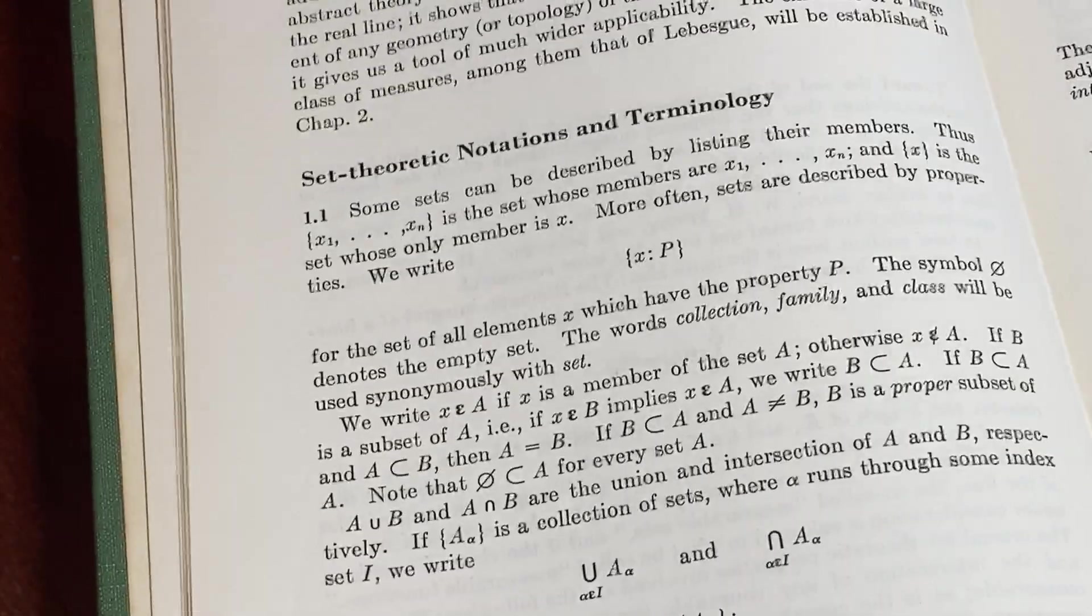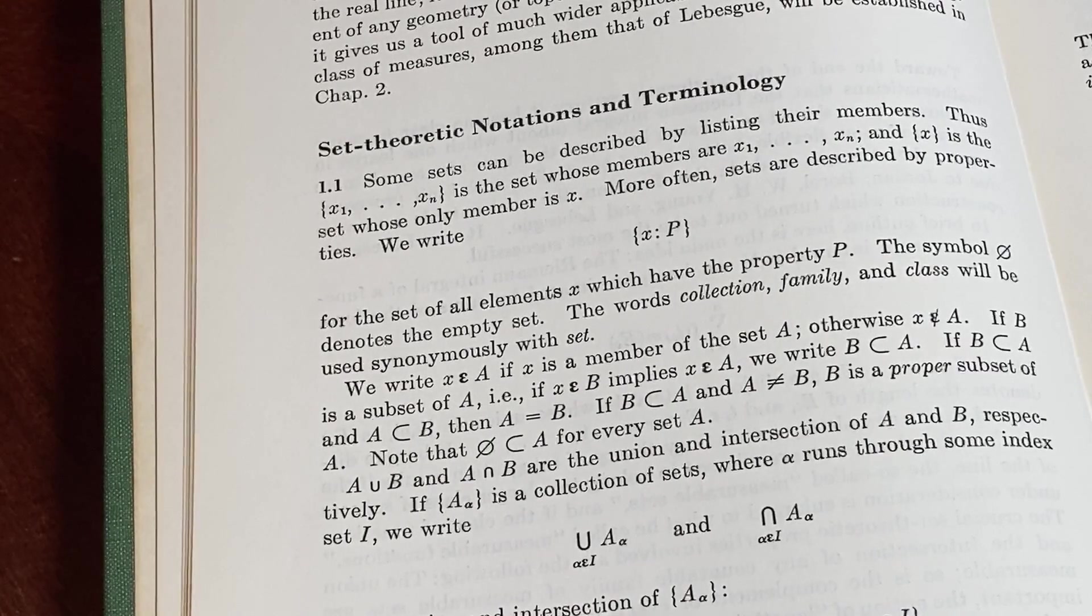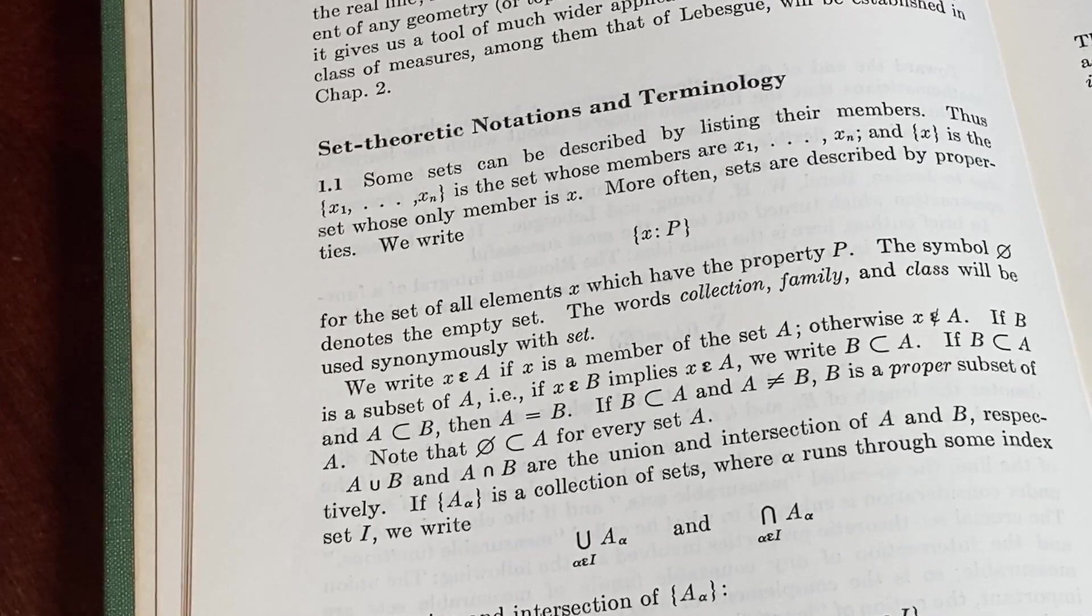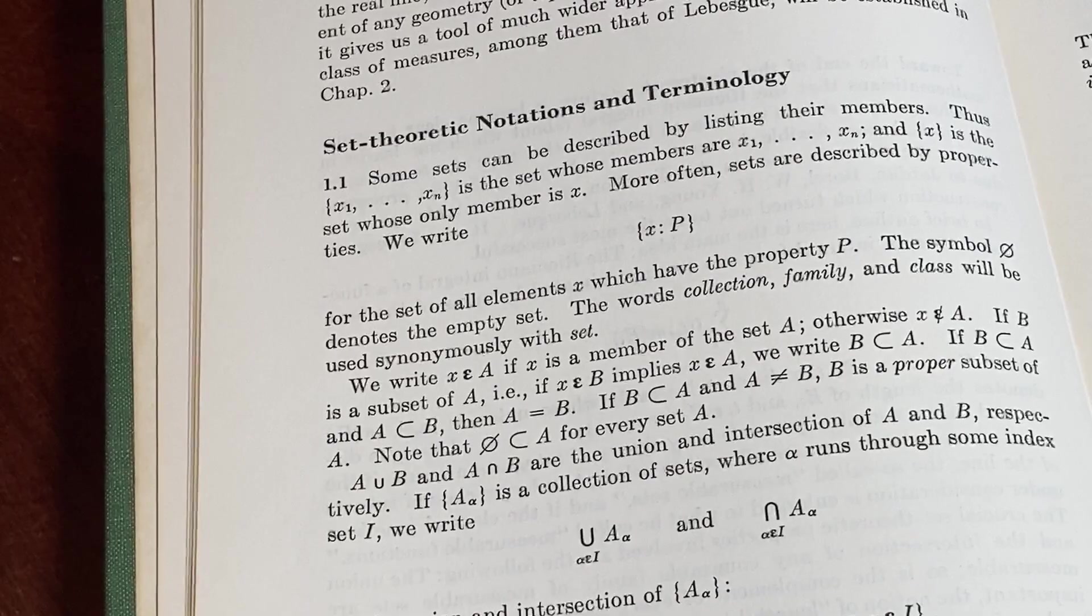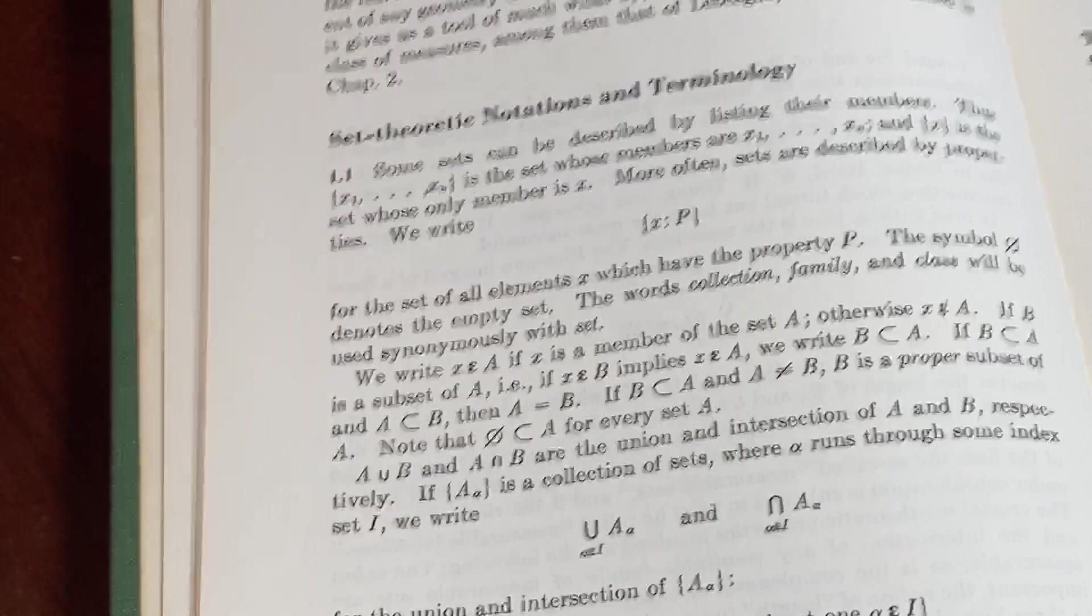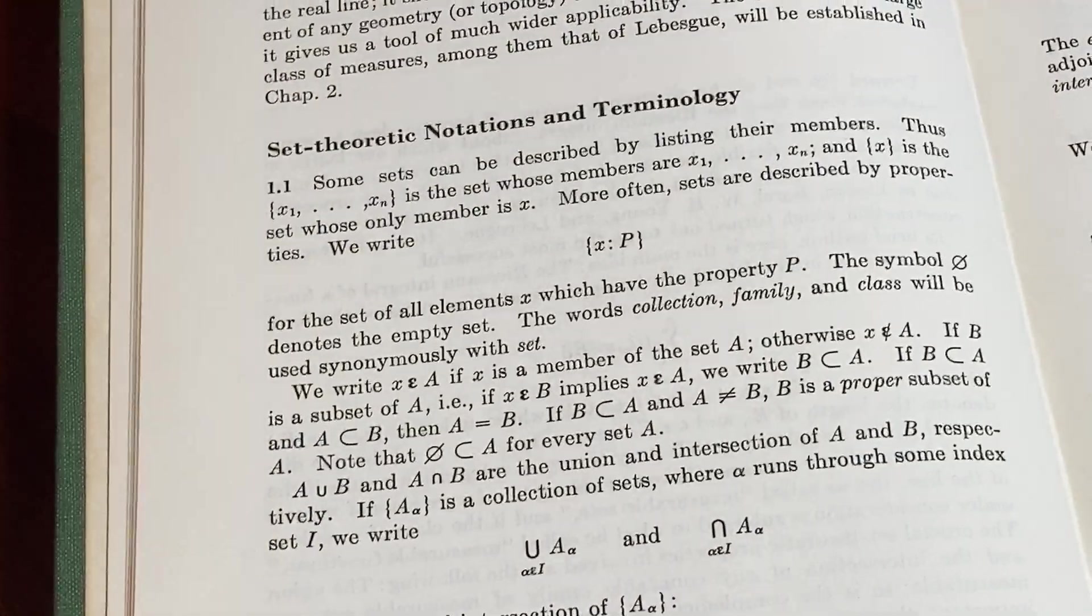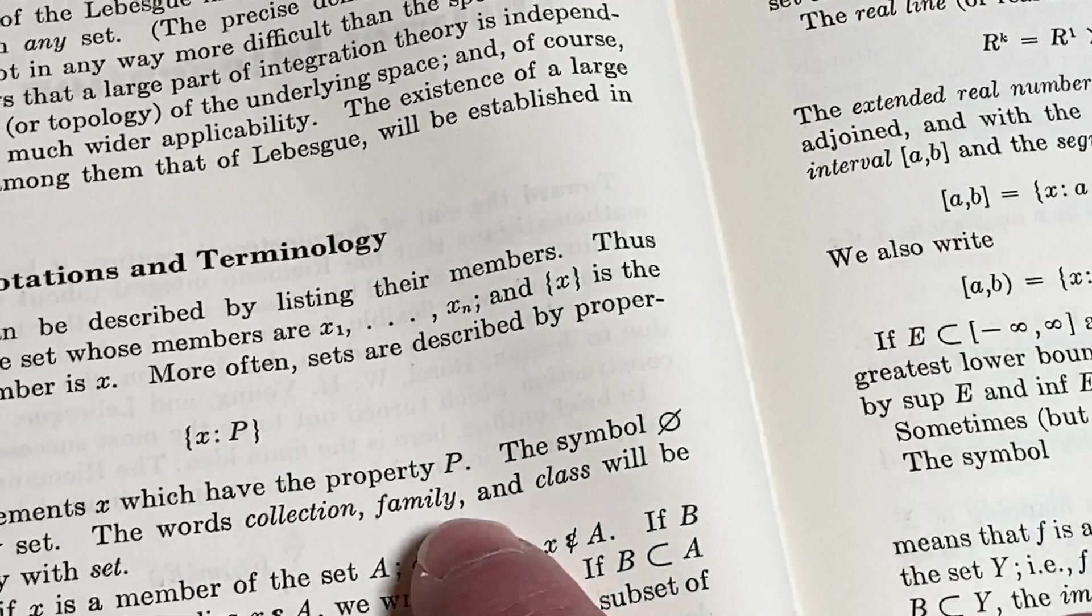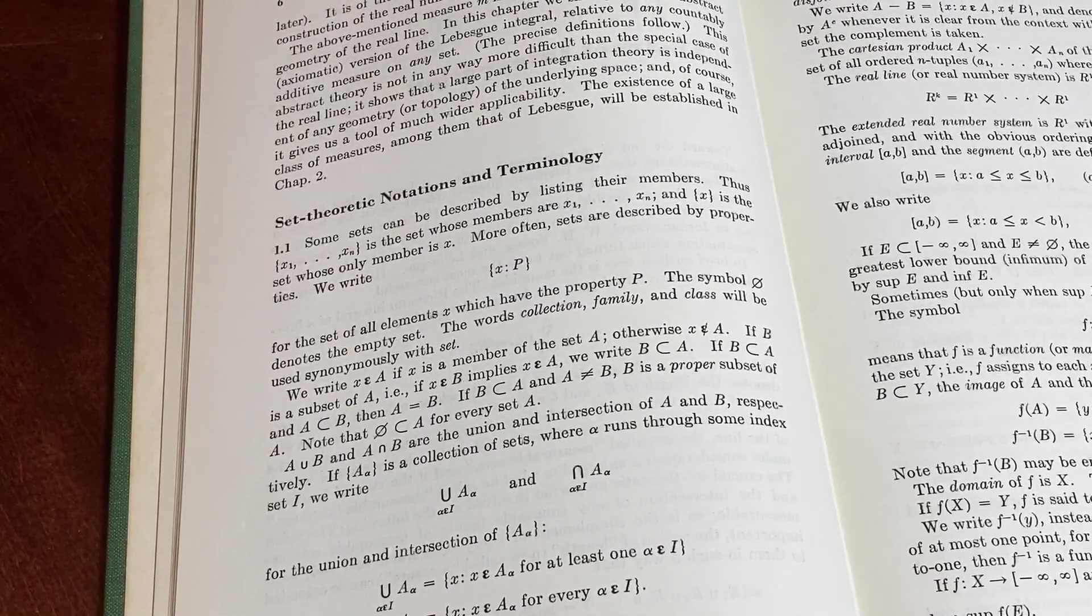The words collection, family, and class will be used synonymously with set. Yeah, that's good, keeps it simple. This is just a personal choice and I'm not saying this is the way people do it. When I use the words family and class, everyone has their own style of proof writing.